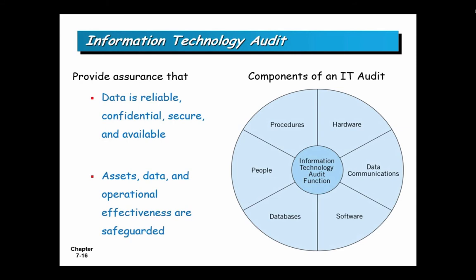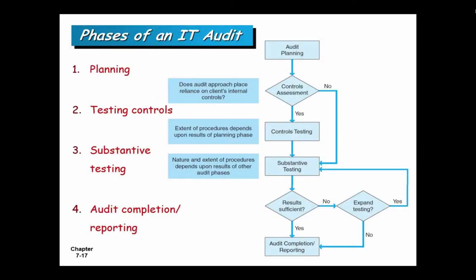It's important to audit your technology to make sure it's doing what it's supposed to be doing. A lot of what we're about to talk about mirrors what we talked about last time. For all the things you need to have controls for, you should need to audit those controls. You want to make sure that your data is reliable, confidential, secure, and available. And you also want to make sure all your systems are running effectively. So an IT audit has four phases: it starts with planning the audit, finishes with completing the audit, and in the middle you test your internal controls and do substantive testing.